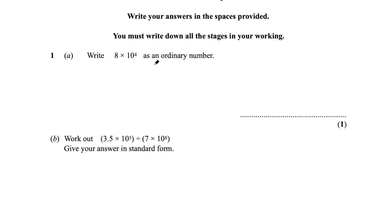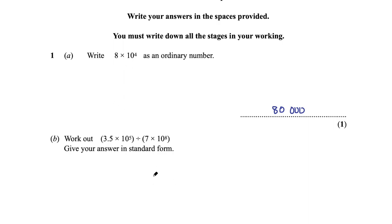Question 1, part A says write 8 times 10 to the power of 4 as an ordinary number. Well it's 8 times 10,000. 10 to the power of 4 is 10,000, so 8 times 10,000 is 80,000. The power is equivalent to the number of zeros when converting from standard form to an ordinary number.